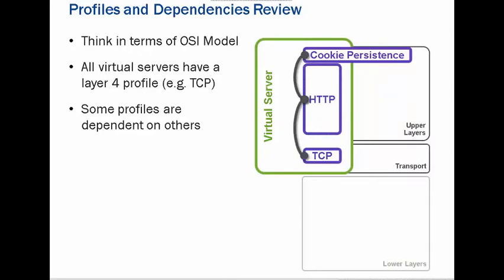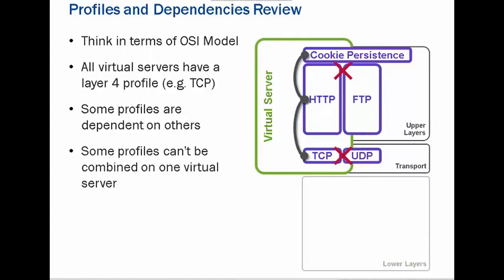All virtual servers have a four-layer profile like TCP. Some profiles are dependent on each other — HTTP will always be dependent on TCP. And some profiles cannot be combined. TCP and UDP cannot be combined, because TCP is a connection-oriented protocol: it needs acknowledgement before sending traffic. But UDP doesn't — when a UDP packet is sent, whether the client receives it or not, it doesn't bother. TCP receives acknowledgement before sending the next packet, based on windowing. So some profile combinations are not allowed, like TCP and UDP.